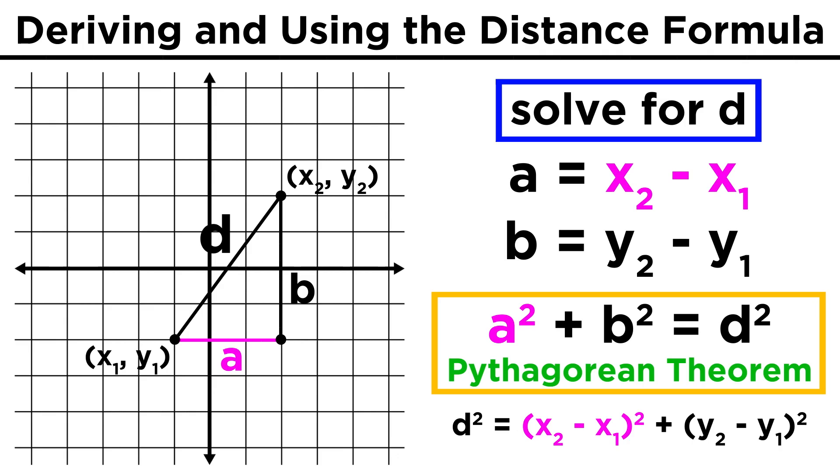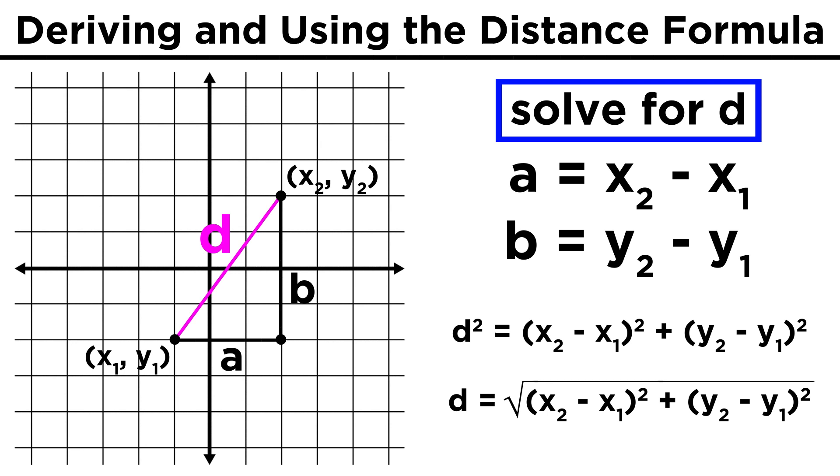Now we just use the Pythagorean theorem. The square of this leg plus the square of the other leg equals the hypotenuse squared, or d squared. Then all we do is take the square root of both sides to solve for d.